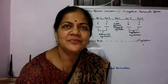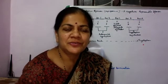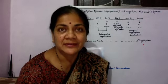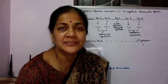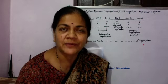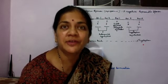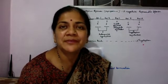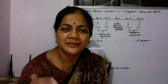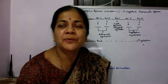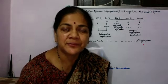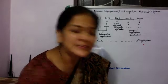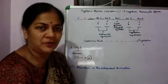Hello everyone. In this video I'll be talking about the tryptophan operon. The tryptophan operon is an example of a negative repressible operon. The term 'negative' refers to the regulatory protein — because it's negative, it's a repressor, meaning when this regulatory protein binds to the operator site, that operon is shut down. The term 'repressible' means the tryptophan operon is normally on and has to be repressed.